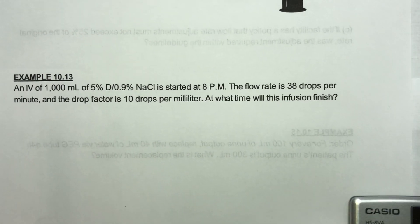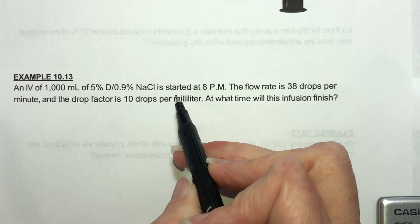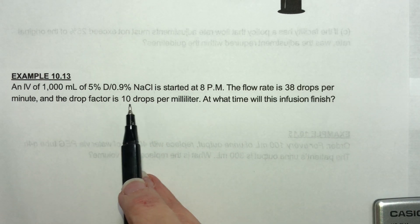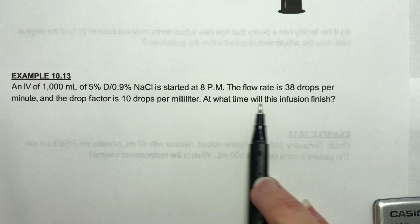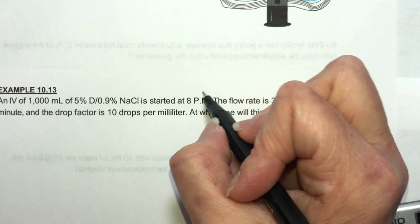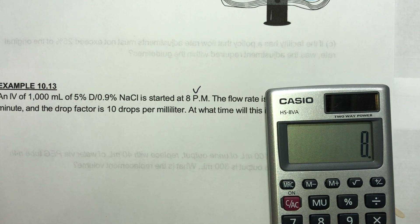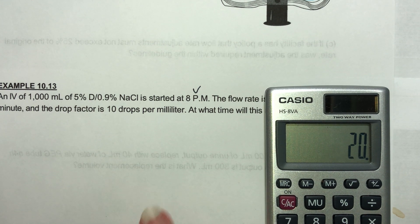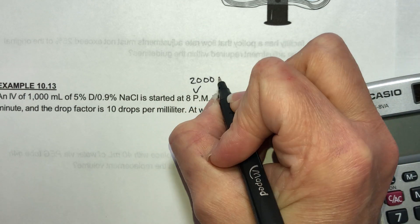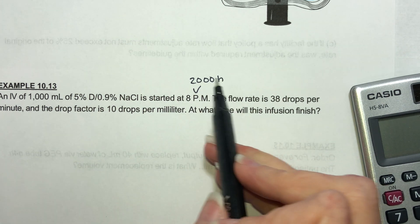Let's look at number 13. An IV that contains 1,000 milliliters started at 8 p.m. The flow rate is 38 drops per minute and the drop factor is 10 drops per milliliter. At what time will this infusion finish? Converting 8 p.m. to 24-hour time: we take 8 and add 12 to get 20:00. We'll use that in a minute.